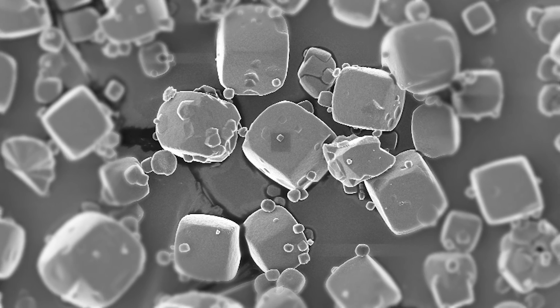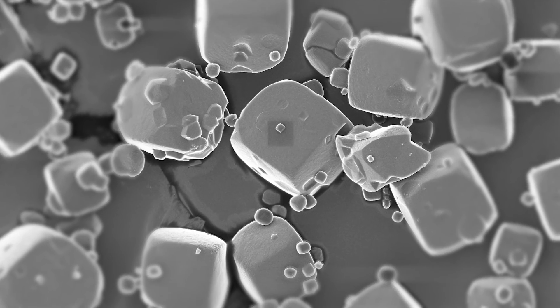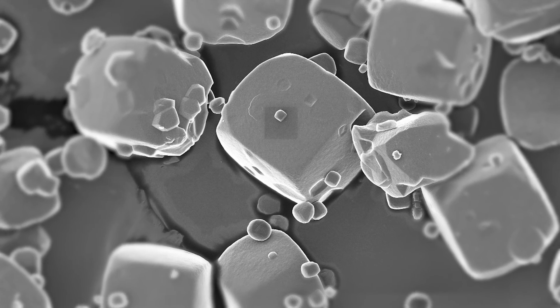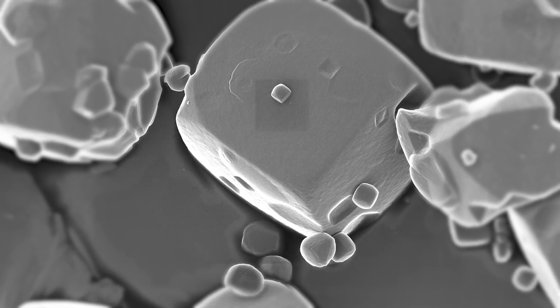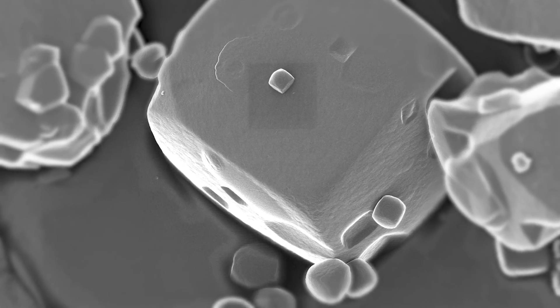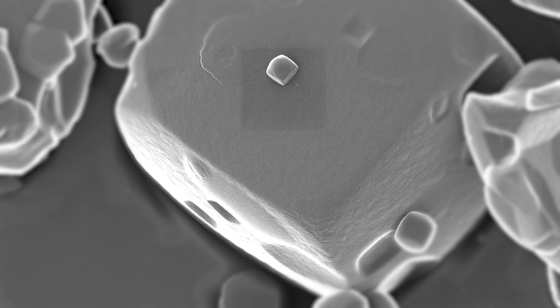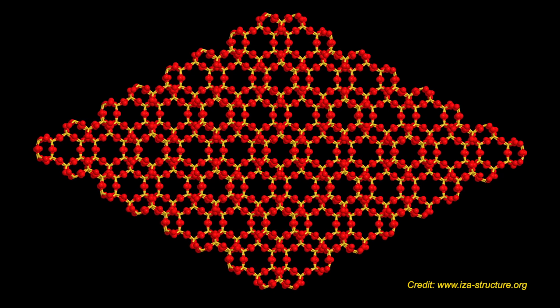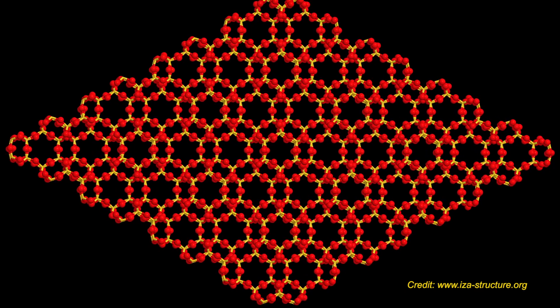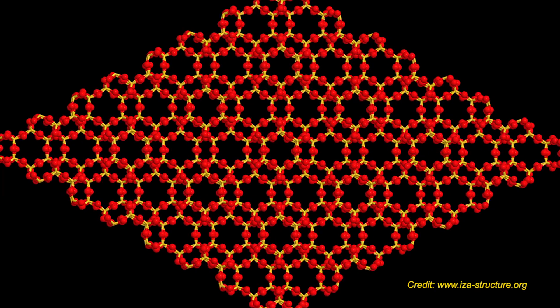If this white powder looks ordinary to you, take a closer look. Much closer. This is a zeolite. A zeolite is a crystalline material composed of silicon, oxygen, and varying amounts of aluminum. This structure contains microscopic channels, sort of like a sponge.